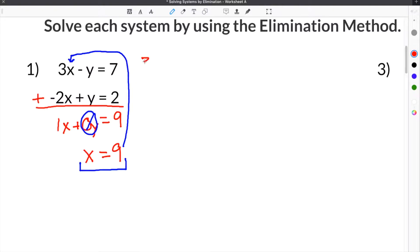So now we have 3 times 9, which is what we substituted in for x, minus y equals 7. So now we know x is equal to 9, but we have to find y, because we have to know the x and the y coordinate for this solution of this system.